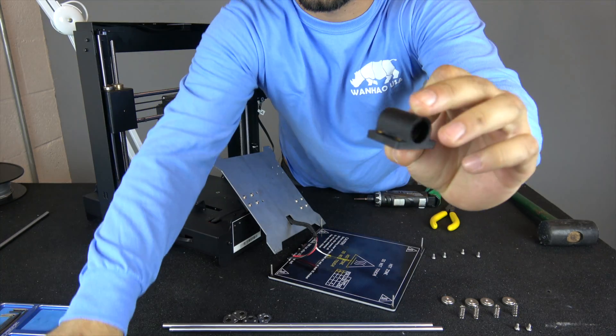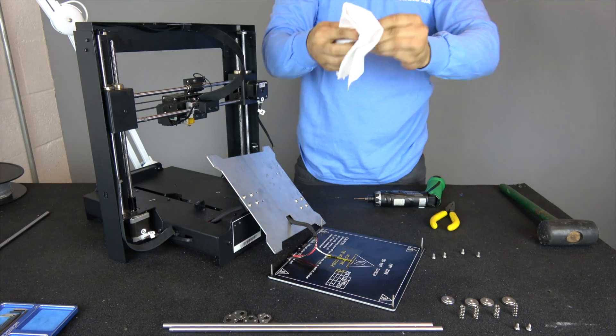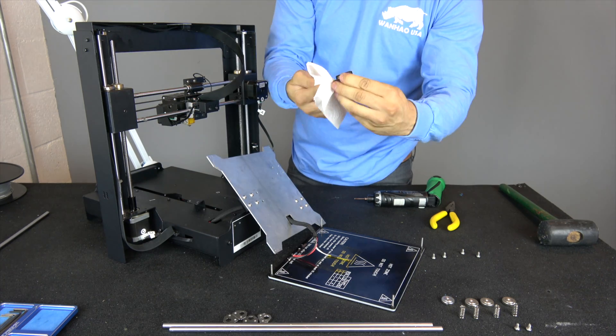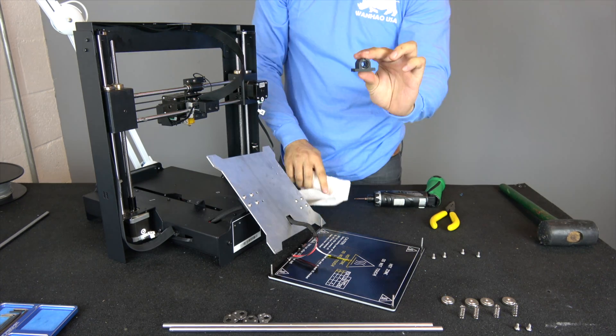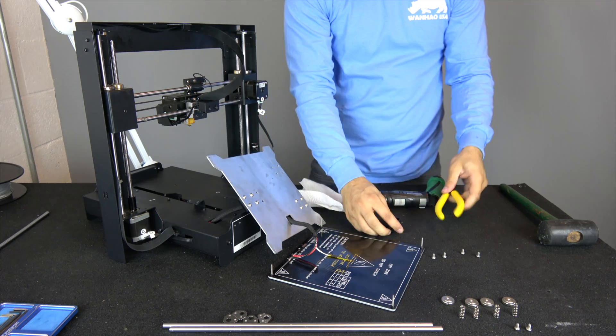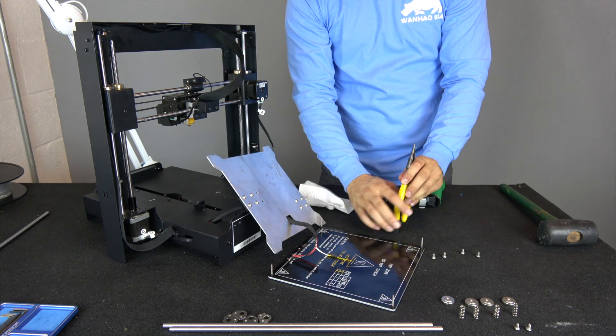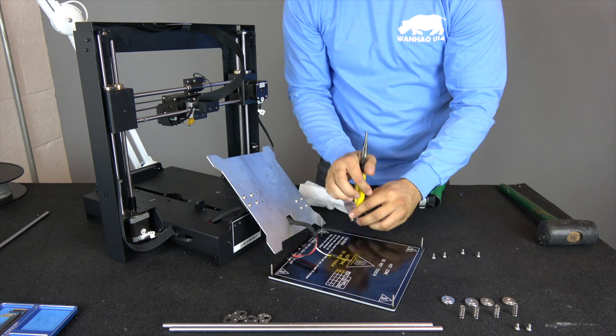Make sure to wipe any excess grease off of your bearing. Then, in order not to damage anything, use a padded tool like these pliers to carefully push your bearing out of its housing.